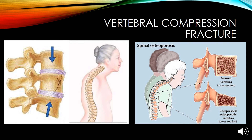The most common type of compression fracture occurs in the vertebrae, known as a vertebral compression fracture. The spine is normally able to absorb a lot of force, but if the force is too strong or the spine has become weak due to osteoporosis, then some vertebrae may fracture. Having multiple fractures in the vertebrae can lead to kyphosis, which is a hump-like curvature in the spine.